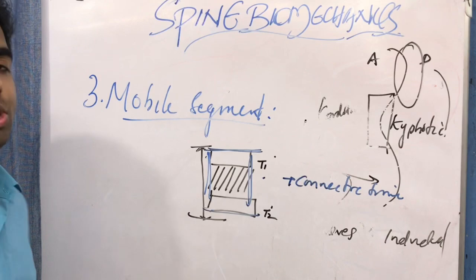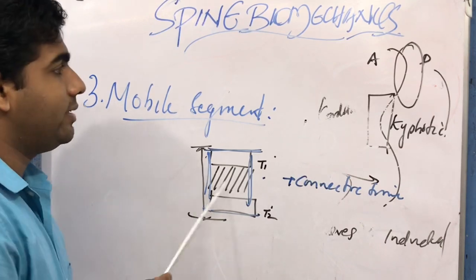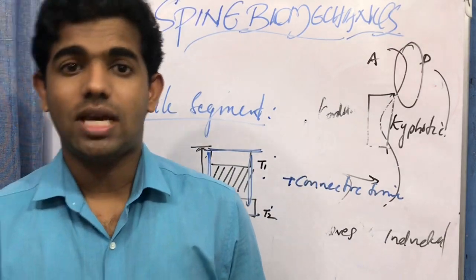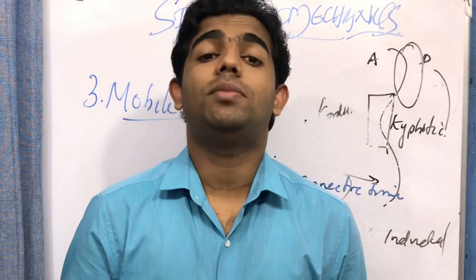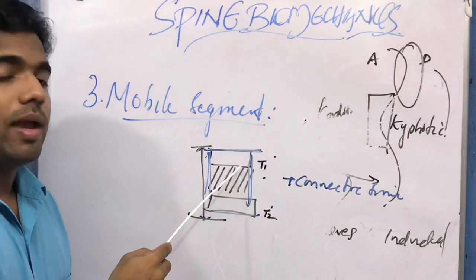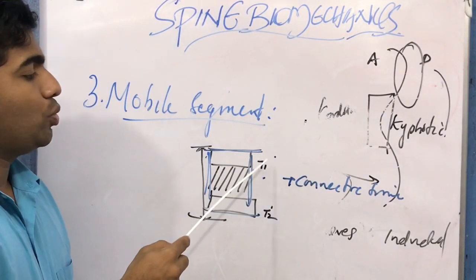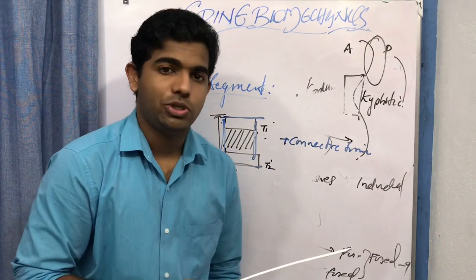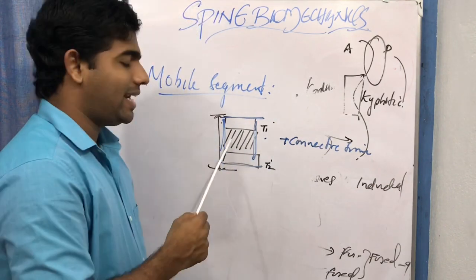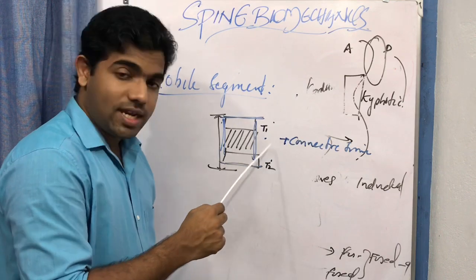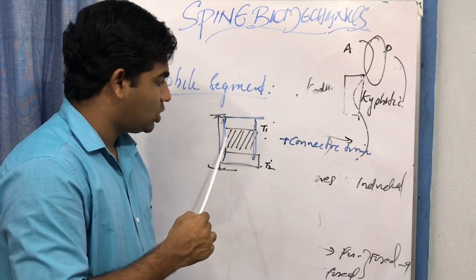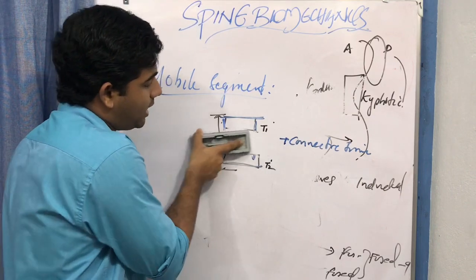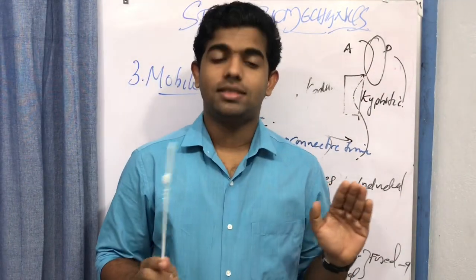There are 33 vertebrae and 23 intervertebral discs, so in some regions an intervertebral disc may be absent. In those regions, the mobile segment is made up of the superior and inferior vertebrae along with their associated connective tissues — the disc is simply absent from that mobile segment.